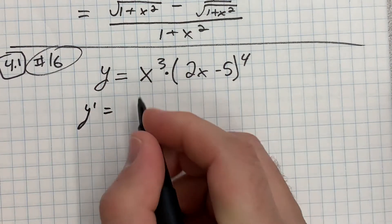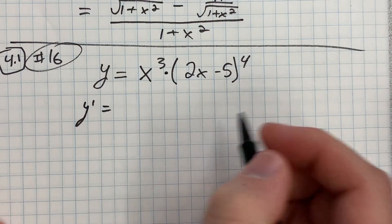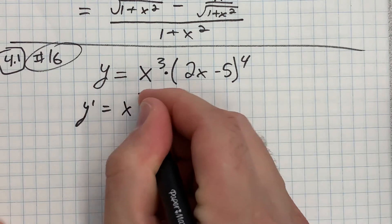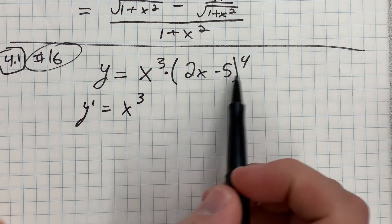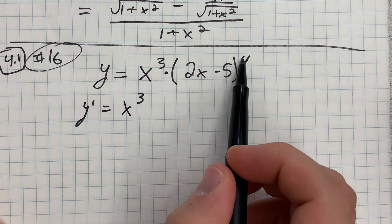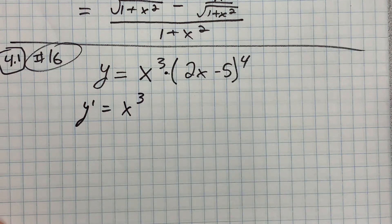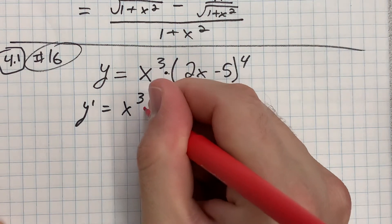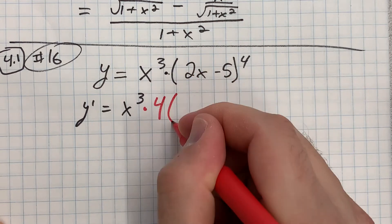So y prime is going to equal the first times the derivative of the second. So x cubed times the derivative of the second. I'm going to put the four out in front, so times four, leave the inside alone.